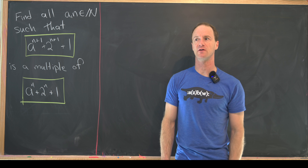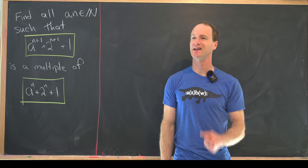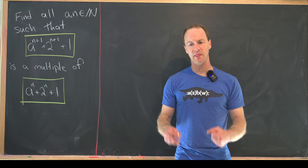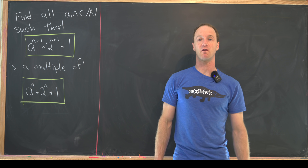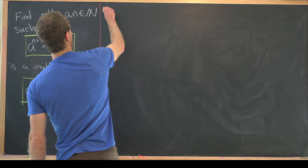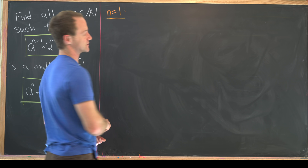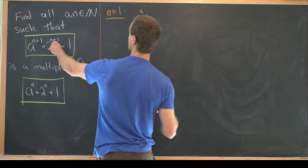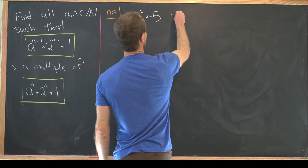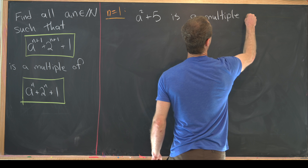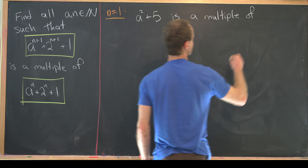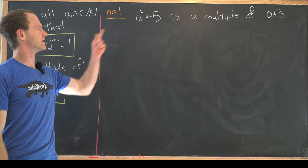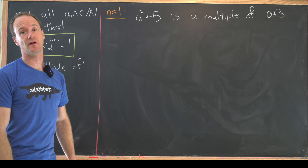We're going to handle smaller cases first — values of n like 1 and 2, and values of a like 1 and 2 — then make a big claim involving larger powers of a and n. So let's start with n equals 1. That means a² + 2^(1+1), which is 4 + 1 = 5, is a multiple of a^1 + 3, which is a + 3. So we need a² + 5 to be a multiple of a + 3.